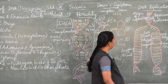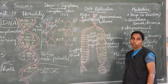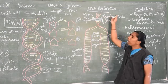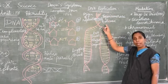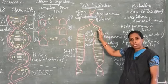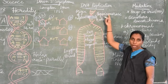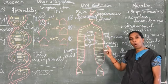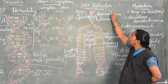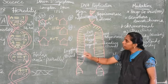Now we shall move on to the next topic: DNA replication. DNA replication is a very important topic. During the time of cell division, the DNA multiplies and forms an exact copy of itself. That is called DNA replication, and this replication is carried out using complementary base pairing.